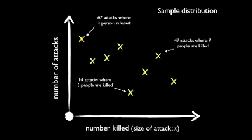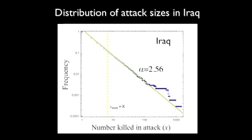Perhaps 67 attacks where one person was killed, or 47 attacks where seven people were killed. We did this exact same thing for Iraq, and we didn't know what we were going to find. And it turns out what we found was pretty surprising. You take all of the conflict, all the chaos, all the noise, and out of that comes this precise mathematical distribution of the way attacks are ordered in this conflict. And this blew our mind.